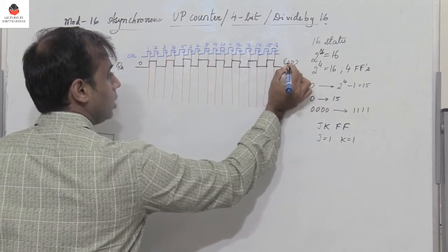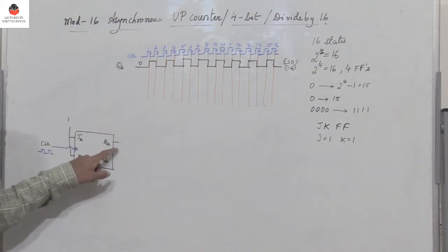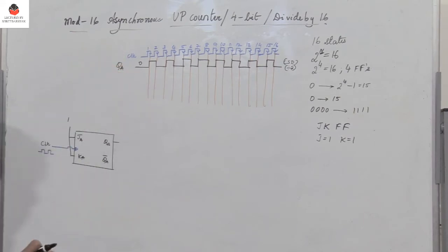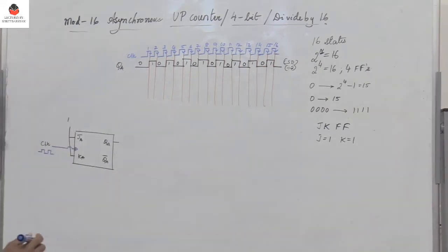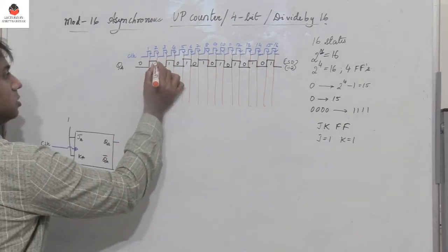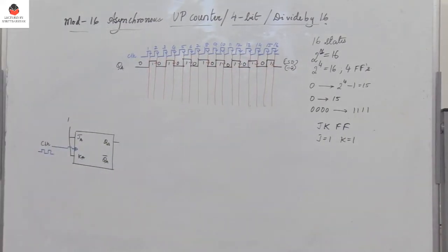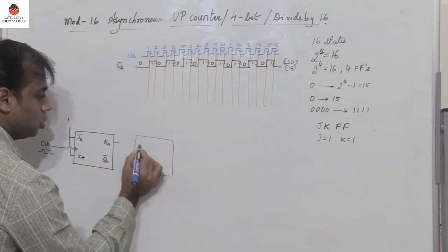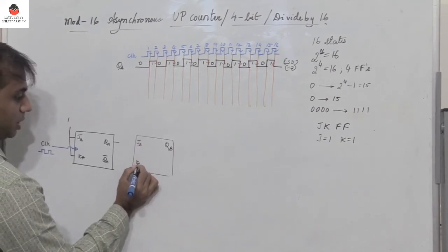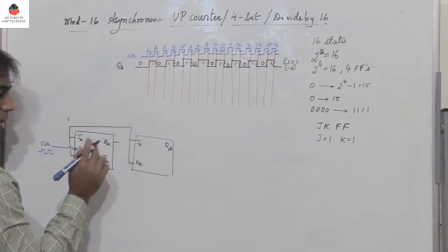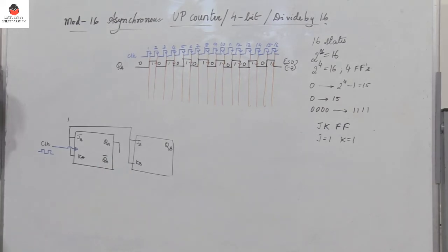QA is the least significant bit, and its waveform is divided by 2 relative to the clock — so QA toggles as: 0,1,0,1,0,1,0,1,0,1,0. Now, the negative edge of QA is used as the clock input to the second flip-flop QB, since the counter is negative-edge triggered. JB and KB are also tied to 1, so QB will toggle on each negative edge of QA.